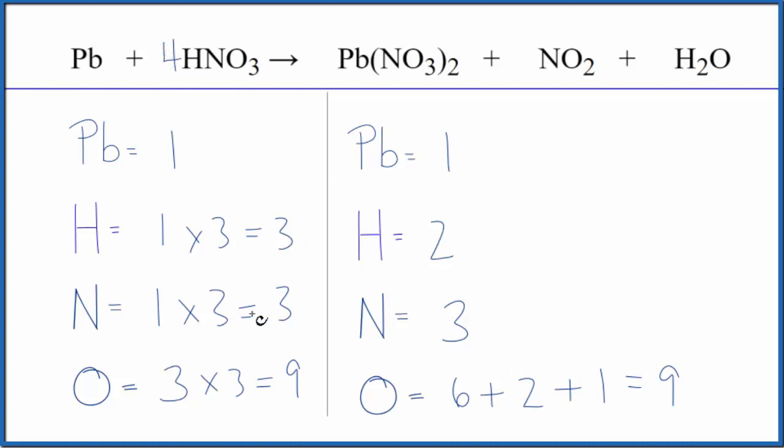And then we need to update all of this information here. So we have one times four. That gives us four. That'll be easy to fix then. One times four here. That gives us four nitrogens. And then three times four. We have 12 oxygen atoms.